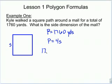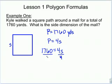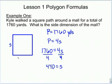We can exchange 1,760 for the P, giving us 1,760 equals 4S. I just need to figure out the length of one side, so I'm going to divide by 4. 1,760 divided by 4 equals 440, and 4S divided by 4 equals S. So one side of this path is 440 yards.